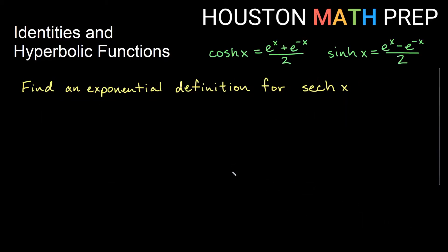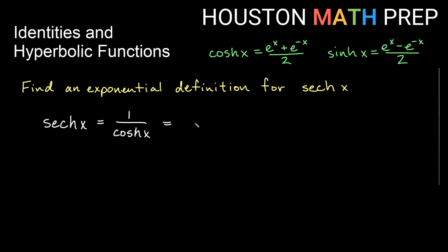So if we want to find an exponential definition for one of the other functions, say hyperbolic secant, then we'll depend on the exponential definitions of either hyperbolic cosine or hyperbolic sine or some combination of the two. Regular secant is the reciprocal of the usual cosine function, and it's true in hyperbolic functions as well. So the hyperbolic secant function is the reciprocal of the cosh function, the hyperbolic cosine function. If I want a definition for hyperbolic secant, I would just plug in the exponential definition for hyperbolic cosine.